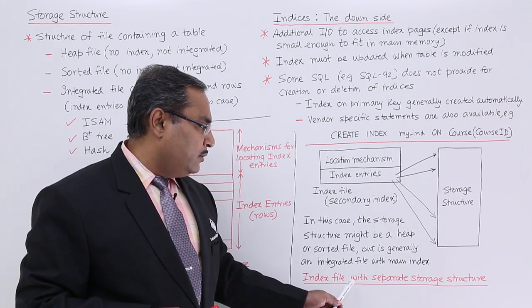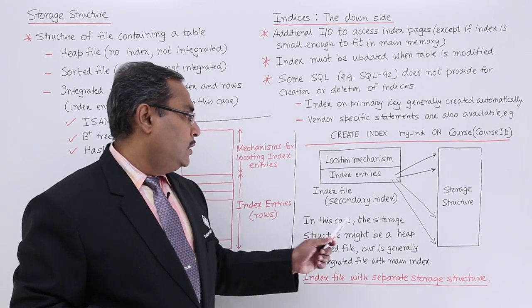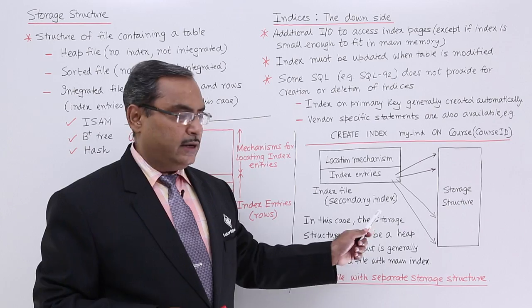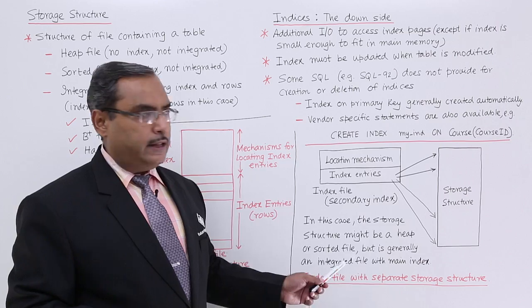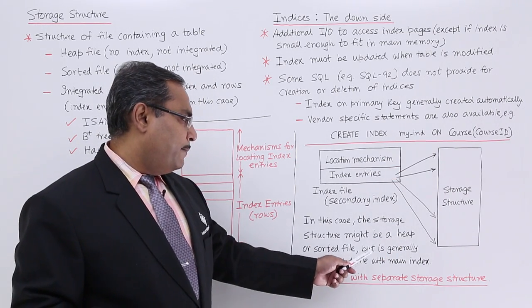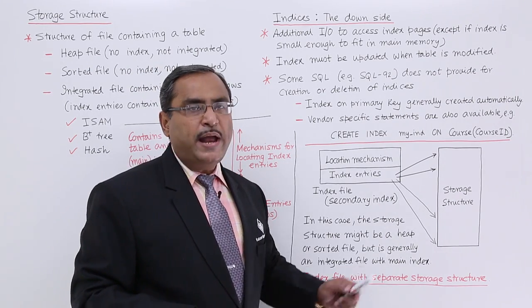Here they are not integrated. That means index file with separate storage structure for the records. This is the index file, that is the secondary index we can call. In this case, the storage structure might be a heap or sorted file. It might be a heap or sorted file, but is generally an integrated file with the main index.